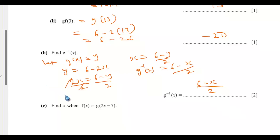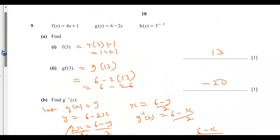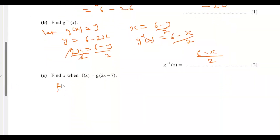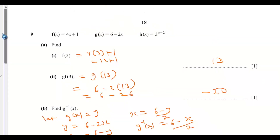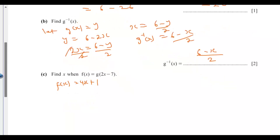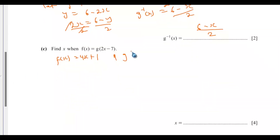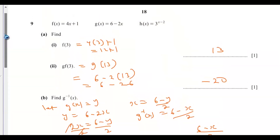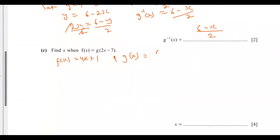For question 9c, find x when f(x) equals g(2x minus 7). We have f(x) equals 4x plus 1, and g(x) equals 6 minus 2x.